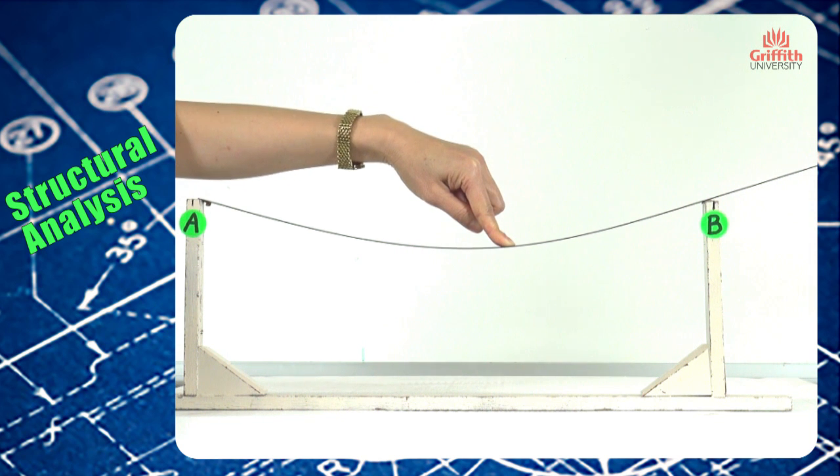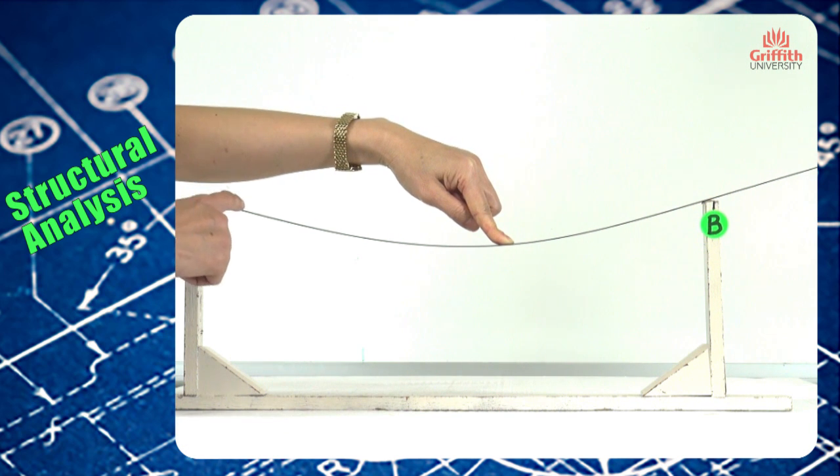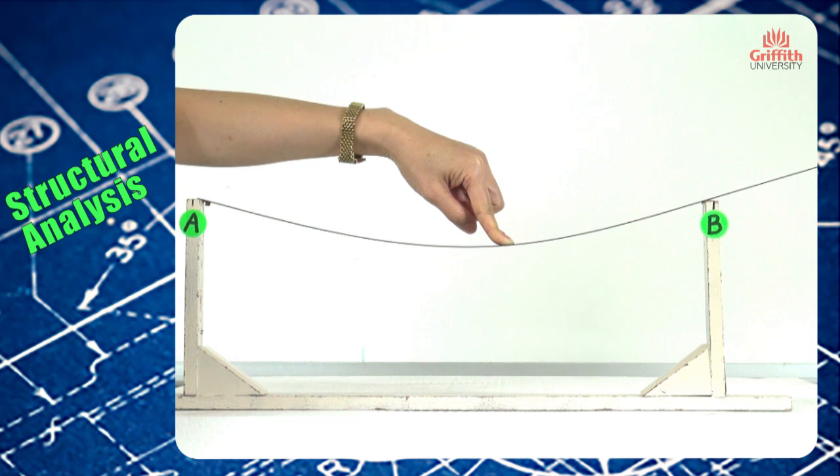because it is a hinge support. However, point A rotates by a certain angle here because hinge support allows rotation to occur. Similarly, at point B, a roller support, rotation is also allowed and the beam deflects into